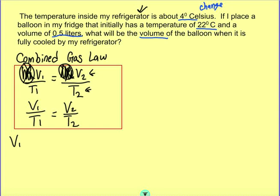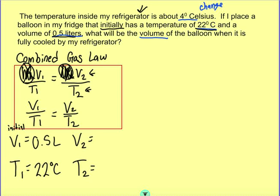Let's go ahead and write out our equations. V1 equals, T1 equals, V2 equals, T2 equals. The first one, these are the initial conditions. It says the balloon initially has a temperature of 22 degrees Celsius, so 22 degrees Celsius, and a volume of 0.5 liters. But then you're putting it in the refrigerator. The refrigerator has a temperature of 4 degrees Celsius. And we're trying to find the new volume.